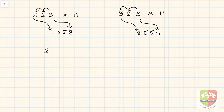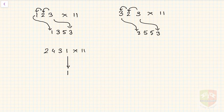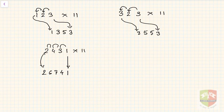Let us try a four-digit number: 2431 into 11. Start with 1, then add 1 plus 3 to get 4, then 3 plus 4 is 7, then 4 plus 2 is 6, and finally bring down 2. The answer is 26741.